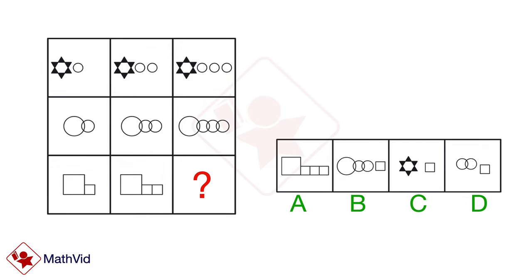In each row, the second picture is made by adding a little shape to the first picture, and the third picture is created by incorporating a small shape into the second picture.